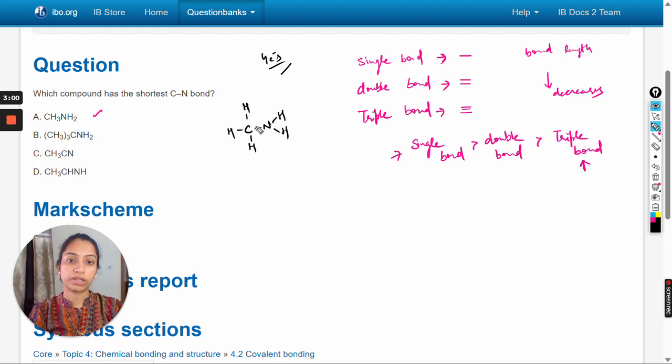Now the octet is complete and there is a single bond between carbon and nitrogen. Nitrogen has five valence electrons, three are already shared and two are here as a lone pair. Now the octet of nitrogen is also complete.